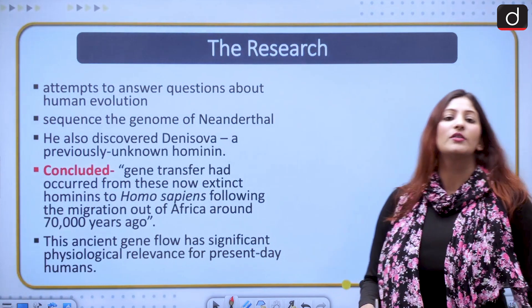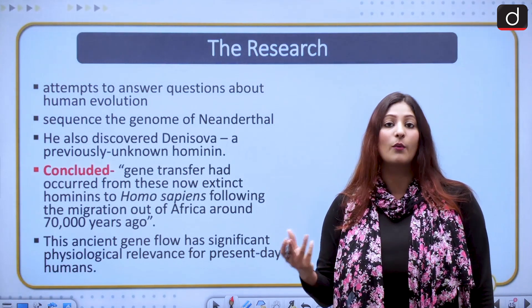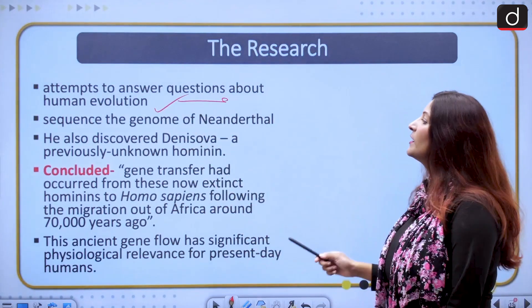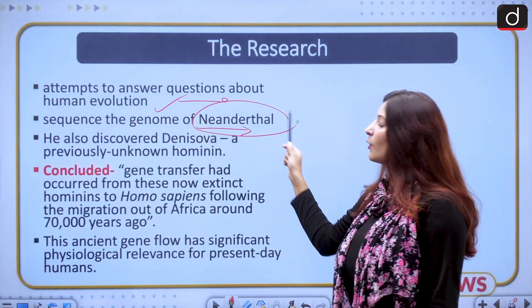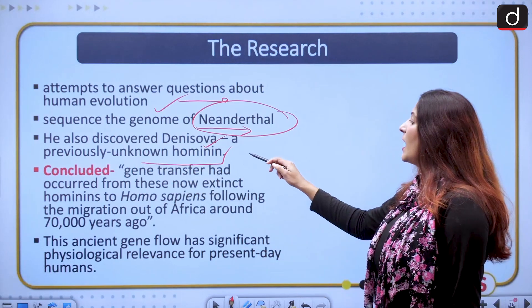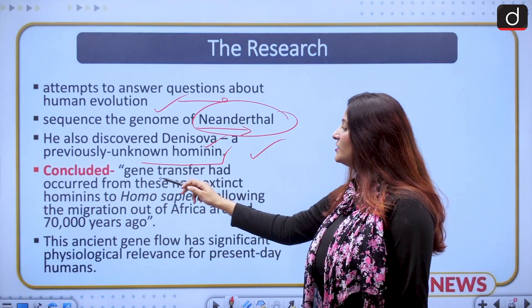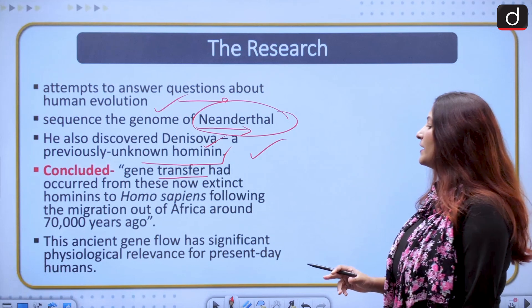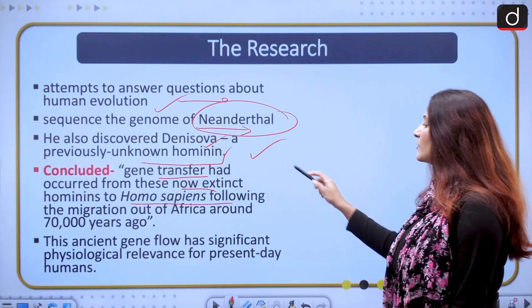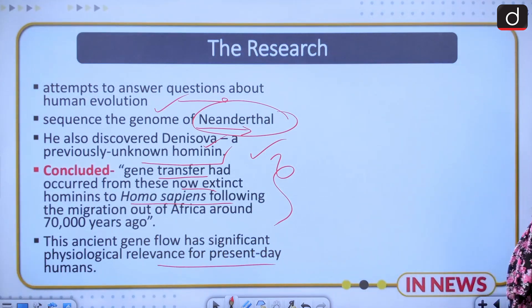Let us talk about the research. His research was studying the genome of Neanderthal and in the process he also got hold of Denisovan. His research attempts to answer questions about human evolution since our ancestors, how we have evolved. The sequencing of the genome of Neanderthal is the main core of the entire activity, discovery of Denisovan, which was a previously unknown hominin. A hominin is basically a member of the current human species but hominins have gone extinct. The conclusion was that gene transfer had occurred, that inbreeding was taking place, gene flow was taking place from now extinct hominins to homo sapiens following the migration out of Africa around 70,000 years ago. The ancient gene flow has significant physiological relevance for present day humans.